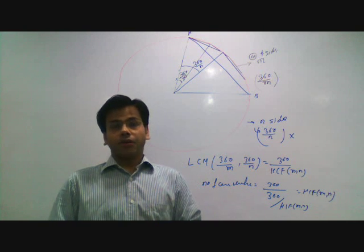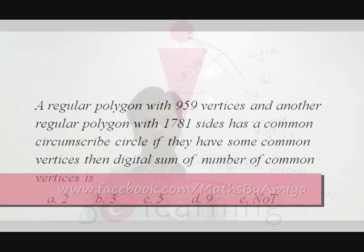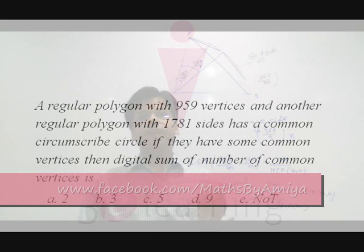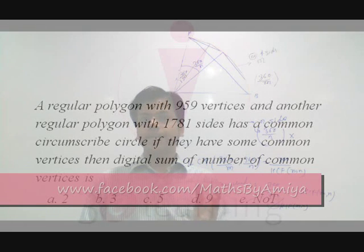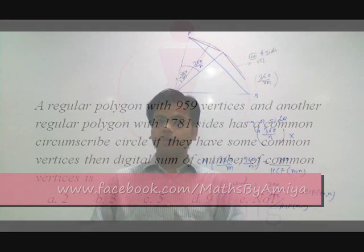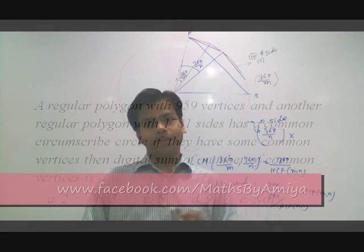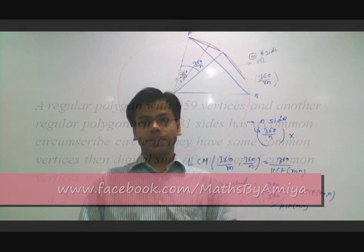This is the direct formula for the question. The data says the vertices of the first regular polygon is 959 and the total number of sides of the second is 1781. In a regular polygon, vertices and sides are the same, so m equals 959 and n equals 1781. The common vertices we get is the HCF of 959 and 1781, which is 137. So 137 is the number of common vertices. The digital sum of 137 is 1 + 3 + 7 = 11, then 1 + 1 = 2.